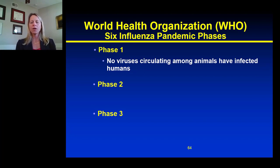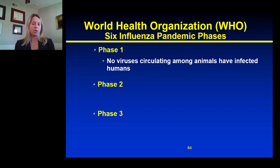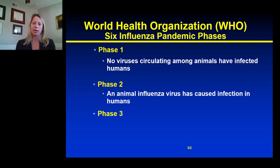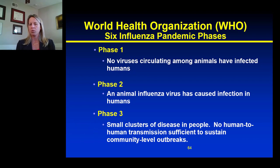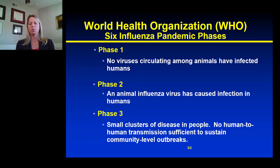The first phase is basically when you have no virus of that flu circulating among animals, nor have they infected humans — so there's essentially no virus circulating that's leading to infection. The second phase is when there is an animal flu virus occurring and it's causing infection in humans. The third phase is when there are small clusters of people with the disease, however there's no evidence of human-to-human transmission occurring at that time.